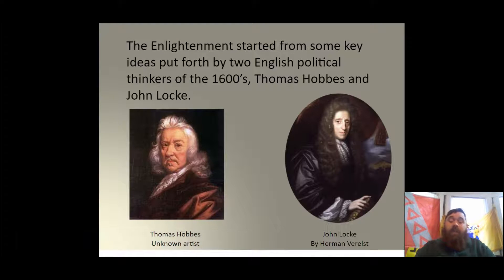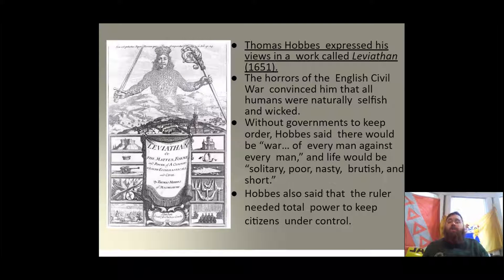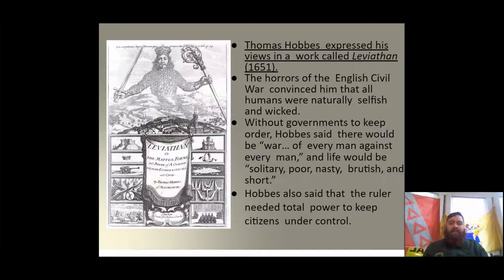There are many Enlightenment thinkers, but right now I want to focus on two of them that come out of jolly old England. In one corner, we have Thomas Hobbes, and in the other, the immortal John Locke. Thomas Hobbes expressed his views in a work called The Leviathan in 1651. This man had just watched the horrors of the English Civil War nearly rip the nation apart, followed by the Hundred Years' War. Hobbes saw all of this death and disruption and believed that humans are naturally selfish and wicked.